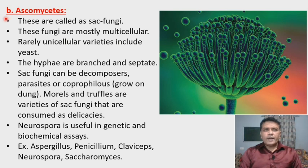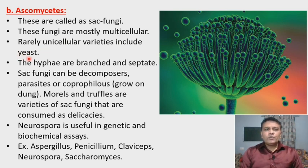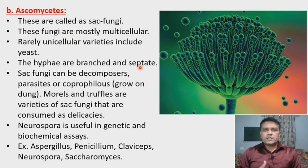The second type of fungi is called Ascomycetes, also known as Sac fungi. These fungi are mostly multicellular, but rarely some are unicellular like yeast — yeast is a unicellular form of Ascomycetes. The hyphae are branched and septate, meaning they show presence of septum or partitions between adjacent nuclei of the hyphae.